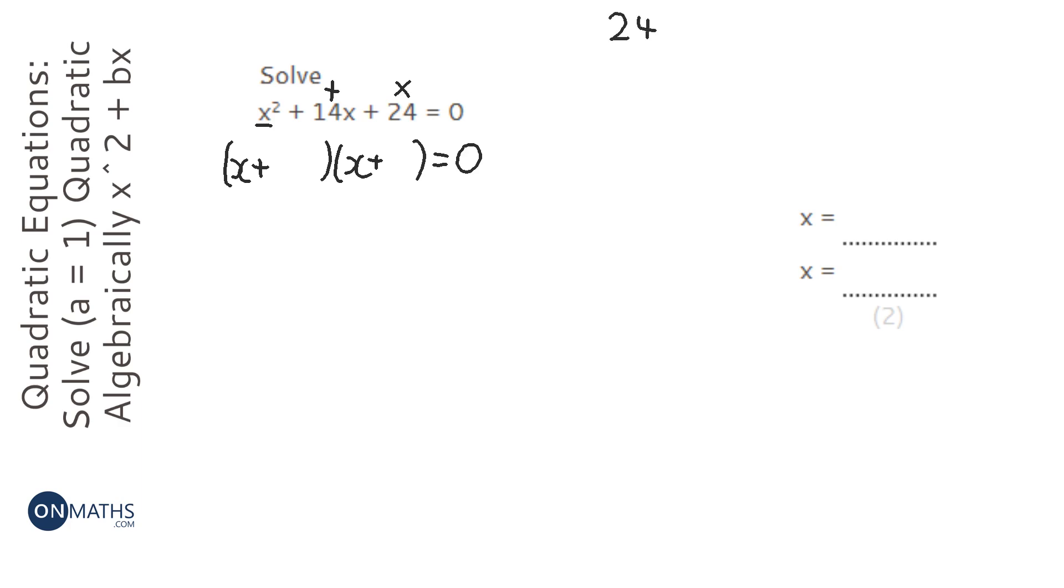So 24, numbers that get to 24, 1 and 24, all those added make 25, so that's not going to be really good. 2 and 12, 2 plus 12 is 14, excellent. So that's going to be 2 and 12.